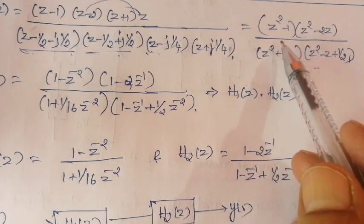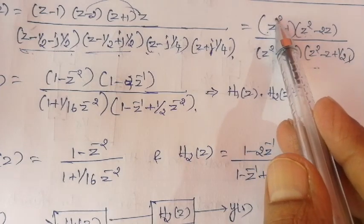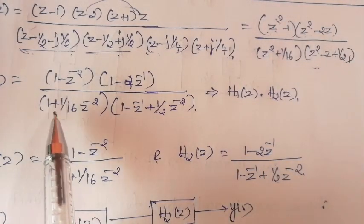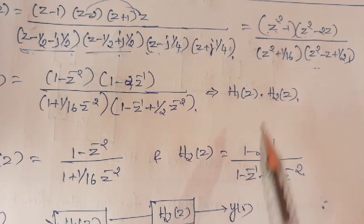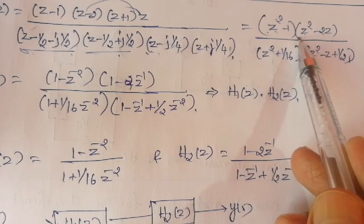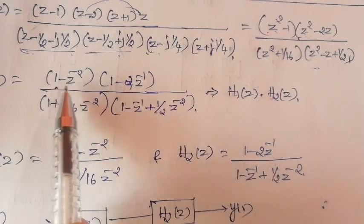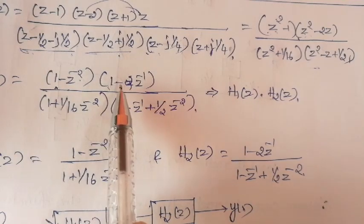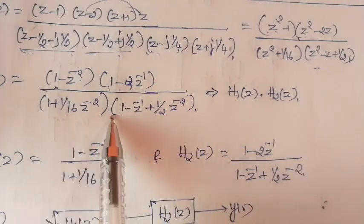After multiplying these two terms, observe that the order is 4. First, we are going to represent in terms of negative powers of z, because the basic delay element is z to the power minus 1. Expressing this term in negative powers of z, we get 1 minus z to the power minus 2, multiplied by 1 minus 2 times z to the power minus 1. Similarly, we express the denominator term.